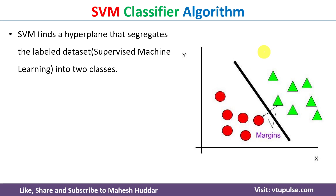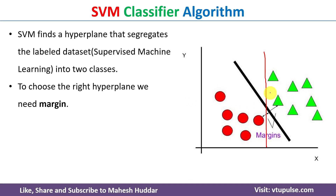Similarly, we can draw another hyperplane like this one — this line can also segregate the given data into two classes. But the question is: how can we select the best hyperplane between the two? Whether this one is good or the other one is the best hyperplane?